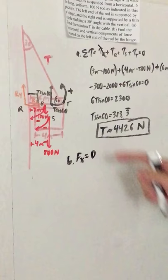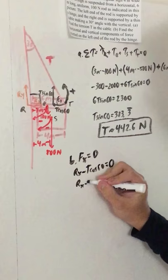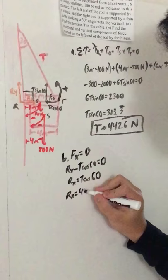And let's assume that Rx is positive and T cosine 60 is negative. So what we do is Rx minus T cosine 60, which equals zero.